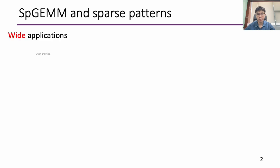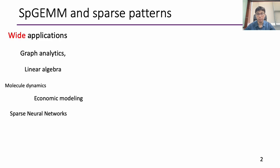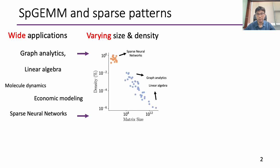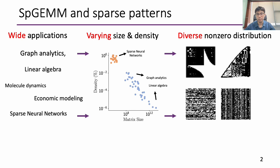Sparse Matrix Multiplication, or SpGEMM, is widely used from graph analytics, molecular dynamics, to machine learning. However, these matrices have drastically varied size and density. For example, the densities of sparse neural networks can be 10^-1, while the density of graph analytics can be 10^-6. Besides, the non-zero distributions of these matrices are also very diverse. This together creates diverse sparse patterns across different workloads.